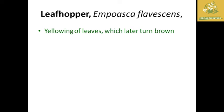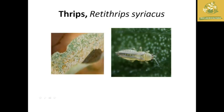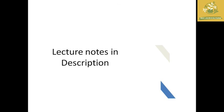Next is the leafhopper, scientific name Empoasca flavescens, on castor. The damage is caused by sap sucking — the leaves will change to yellow color and later to brown color, and the leaves will dry up. This is the major symptom of leafhopper. Next is thrips, which also causes yellowing of leaves on castor.